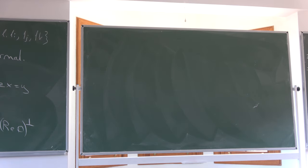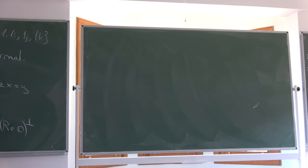So G2 is a subgroup of the orthogonal group. Since it fixes the real Octonians, G2 is actually a subgroup of O(7) — the orthogonal group of the imaginary Octonians.